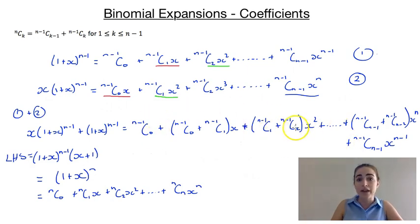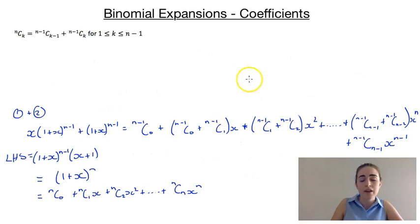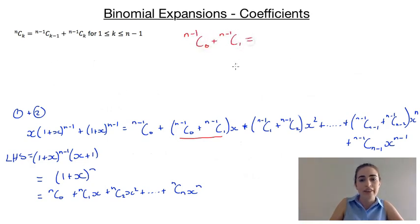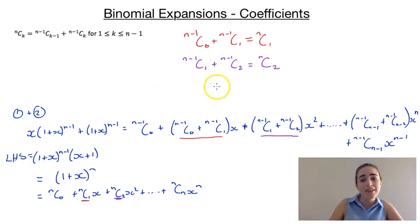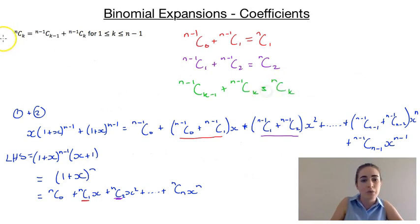Because we know that, we can start to equate coefficients. The coefficient of x here is (n minus 1)c0 plus (n minus 1)c1, and that has to equal the coefficient of x in this expression, which is just nc1. For the x squared term, we equate those coefficients: (n minus 1)c1 plus (n minus 1)c2 is equal to nc2. We could keep going for all of those terms, but the pattern that you can see is that we're going to end up with (n minus 1)c(k minus 1) plus (n minus 1)ck is equal to nck, which is what we were trying to prove.